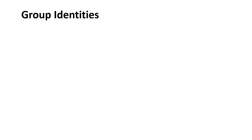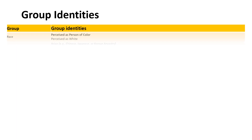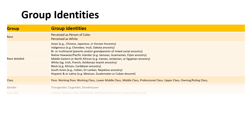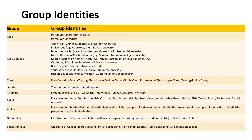As individuals, we have certain traits for which we associate with certain groups. Race is often how we are perceived and is often binary between people who are perceived as white and people who are perceived to be people of color. Additionally, subsets of races and ethnicities can further identify us as part of a group. These stratifications can occur in various groups such as class, socioeconomic status, gender, ability, education level, and other group identities.